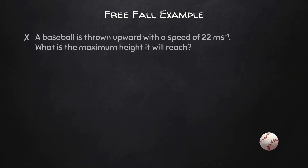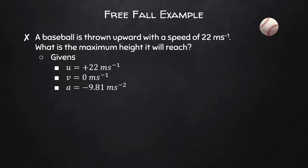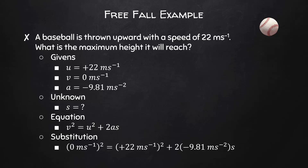Let's take a look at a freefall example. A baseball is thrown upward with a speed of 22 meters per second. What is the maximum height it will reach? The initial velocity is positive 22 m/s; the final velocity at the highest point is 0 m/s; and the acceleration is negative 9.81 m/s². The unknown is displacement S. Using V squared equals U squared plus 2AS, we find the baseball reaches a height of 25 meters.